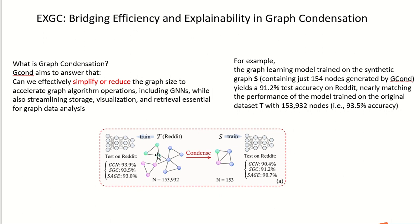we can achieve a 91.2% test accuracy on the original graph. Compared to the graph network trained on the original graph, which contains a lot of nodes, you can achieve an accuracy of 93.5%.